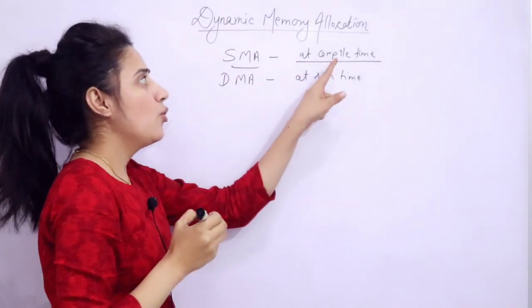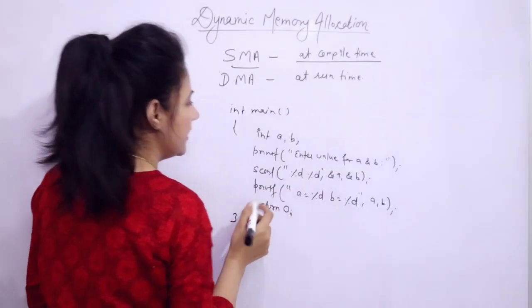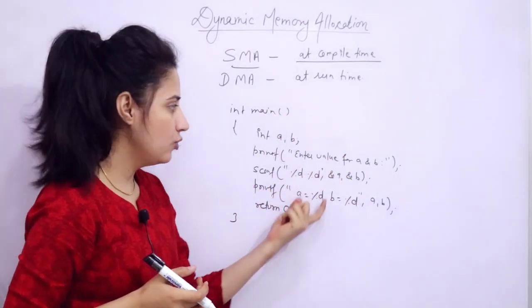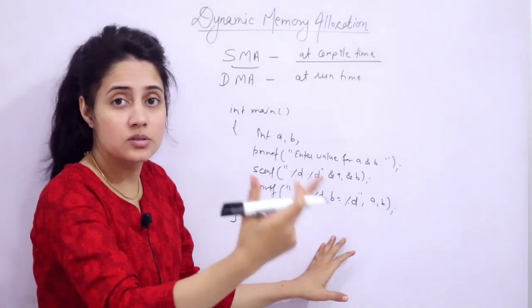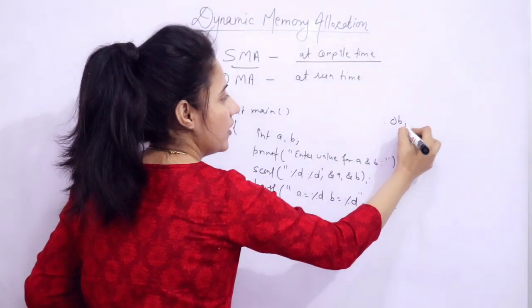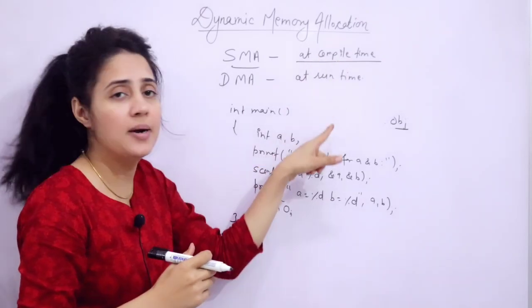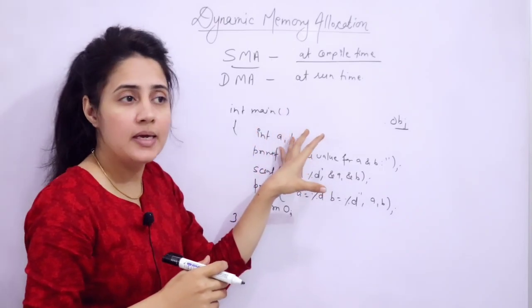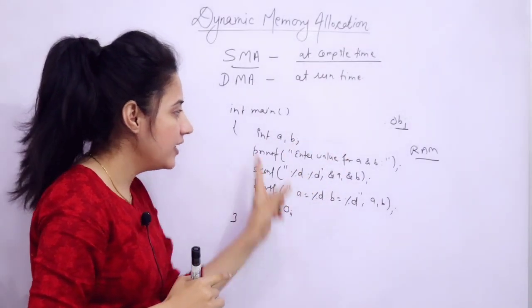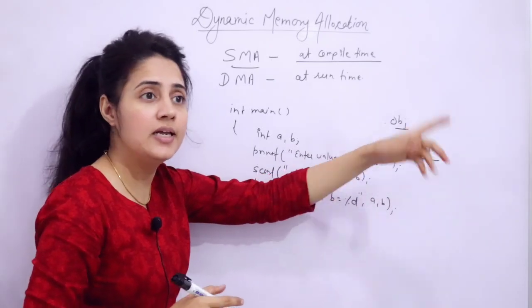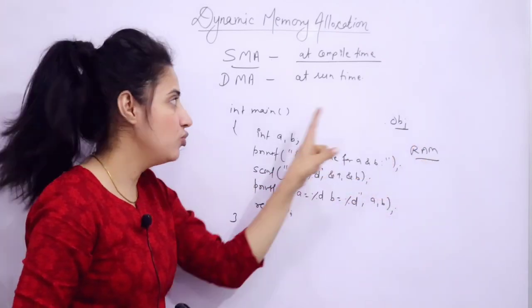More precisely, memory would not be allocated at compile time. Suppose you have written a simple program taking two integer variables, asking the user to enter values of A and B and printing them. At compile time, the program is in a high-level language that the computer cannot understand, so it is converted into an object file. Once the program is in main memory, only then can we allocate memory from RAM. At compile time, we are just converting the code into an object file, then an executable, and after linking and loading, while executing, the program is loaded into main memory — and at that time, memory is allocated to the variables.